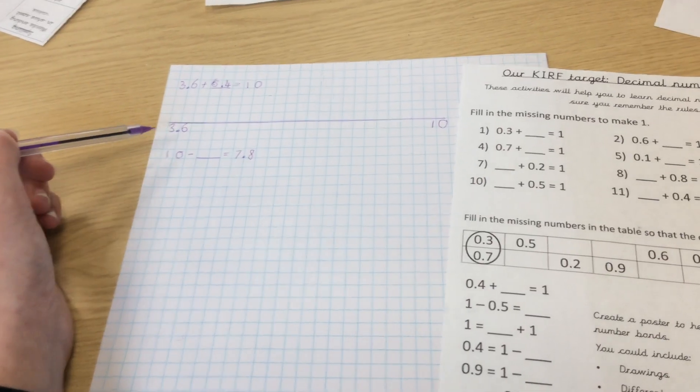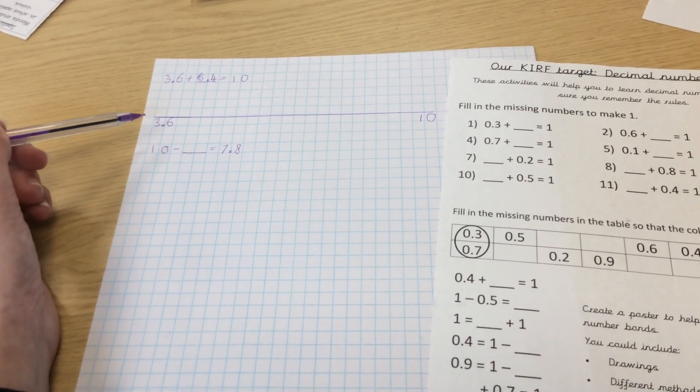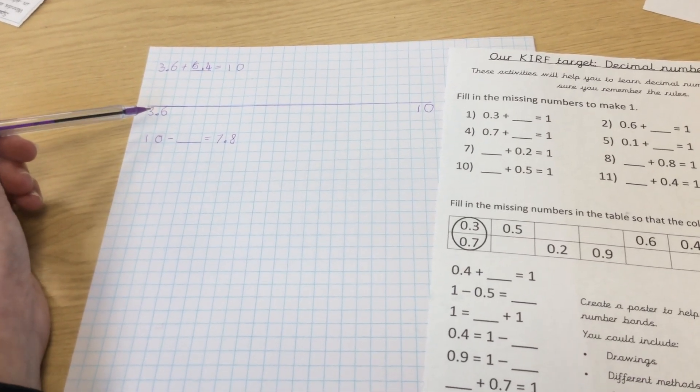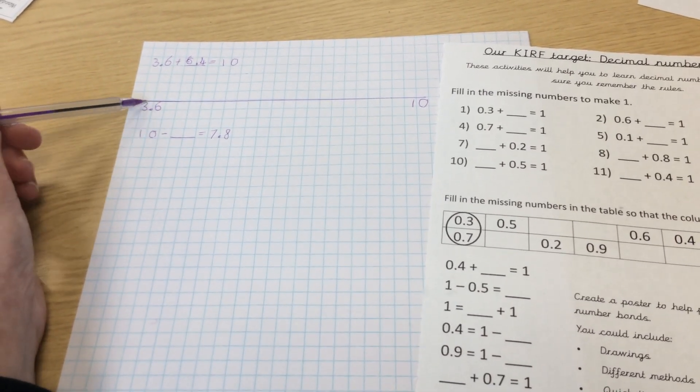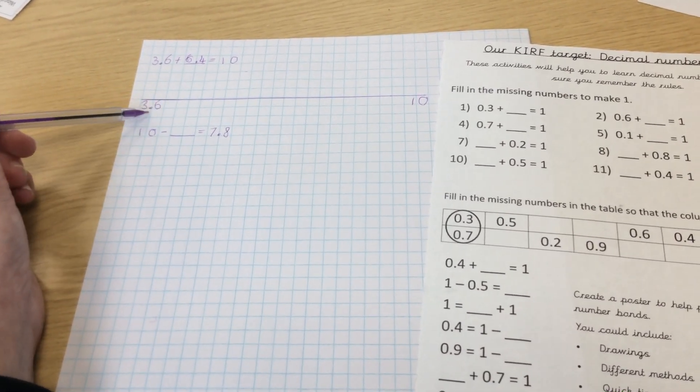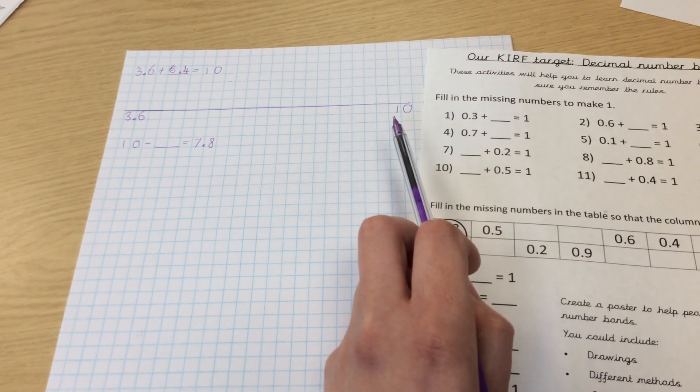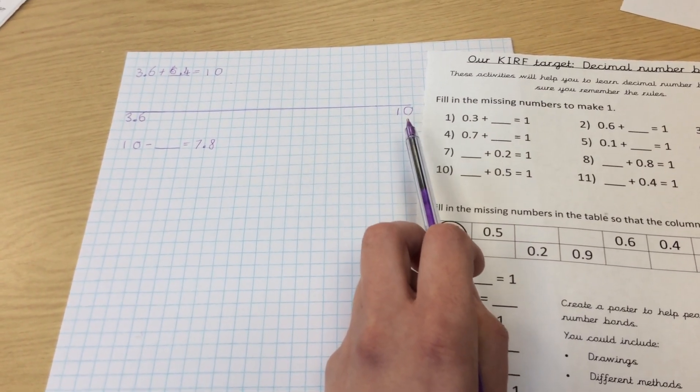Another way that you can do this calculation, a different strategy that you can use, is a number line. So at this end of my number line I've got the number that I'm starting at, which is 3.6, and at this end of my number line I've got the number that I'm trying to get to, which is 10.